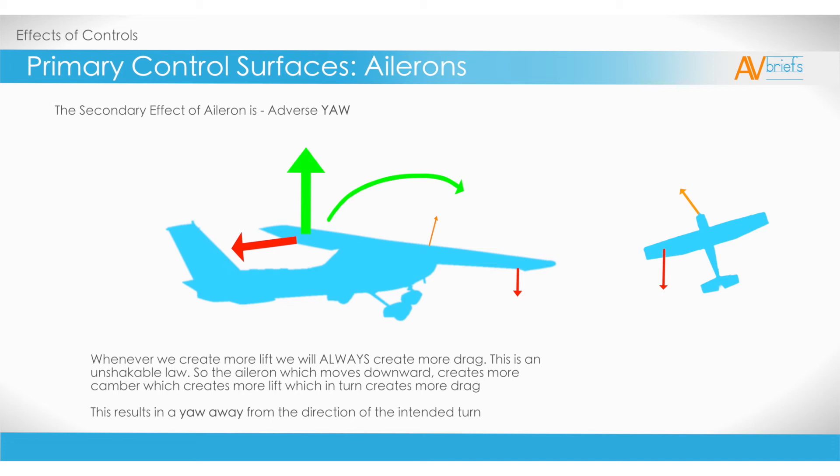On the diagram on the left, you can see the green indicating the increased lift and the desired direction of turn to the right. On the diagram on the right, you can see the red arrow indicating the extra drag created. The orange arrow shows the yaw of the nose to the left. This is far from ideal when you are wanting to turn to the right.